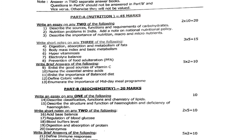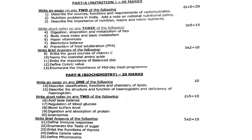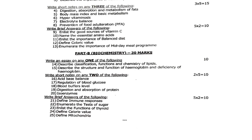Brief answers: 9th: enlist the good sources of Vitamin C. 10th: name the essential amino acids. 11th: enlist the importance of balanced diet. 12th: define caloric value. 13th: enumerate the importance of the midday meal program. Moving to Biochemistry: essay questions — 14th: describe classification, functions, and chemistry of lipids. 15th: describe the structure and function of hemoglobin and deficiency of hemoglobin. Short notes: 16th: acid-base balance. 17th: regulation of blood glucose level. 18th: blood buffer level. 19th: digestion and absorption of protein.